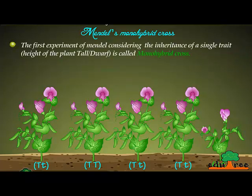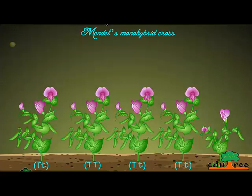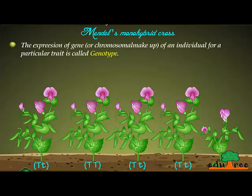The first experiment of Mendel considering the inheritance of a single trait — height of the plant, tall or dwarf — is called a monohybrid cross. Expression of a morphological character such as tall or dwarf plant, or violet or white flower, is called phenotype. The expression of gene or chromosomal makeup of an individual for a particular trait is called genotype.